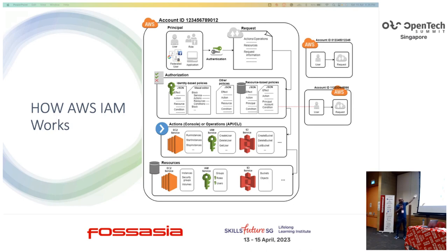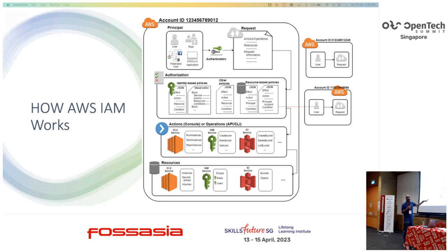You are making an action to a specific resource. It checks whether the authorization is there based on the user. When working in an organization, you will have multiple accounts, and each account will be linked to the other account.